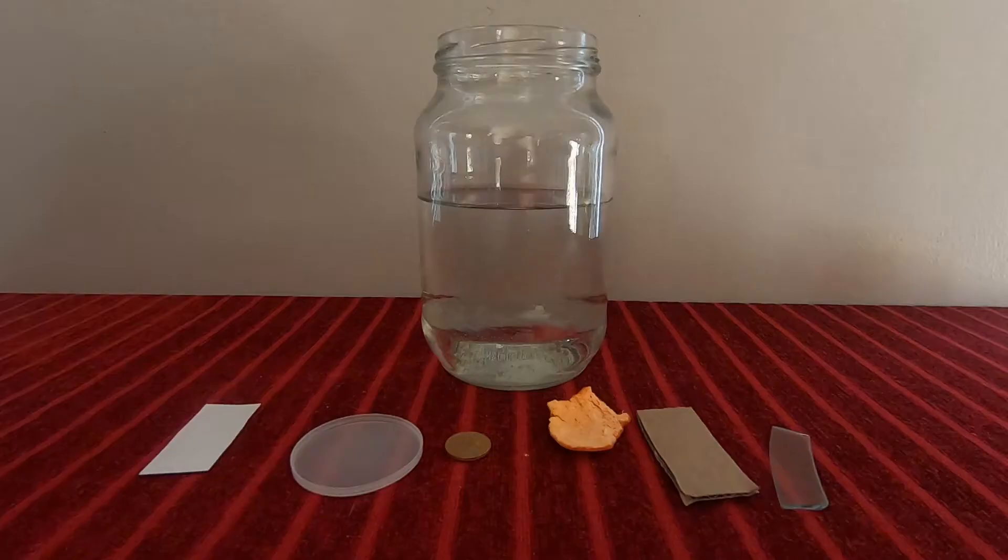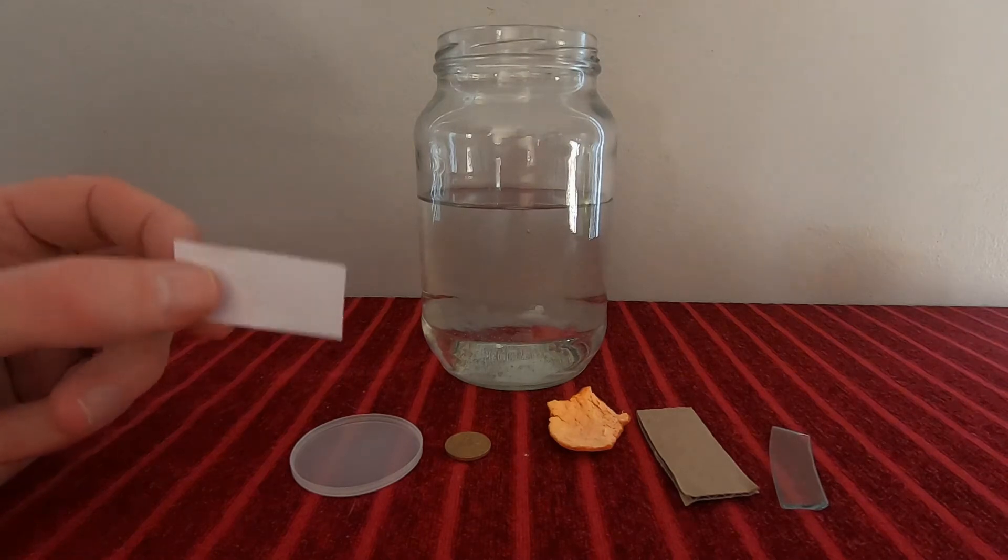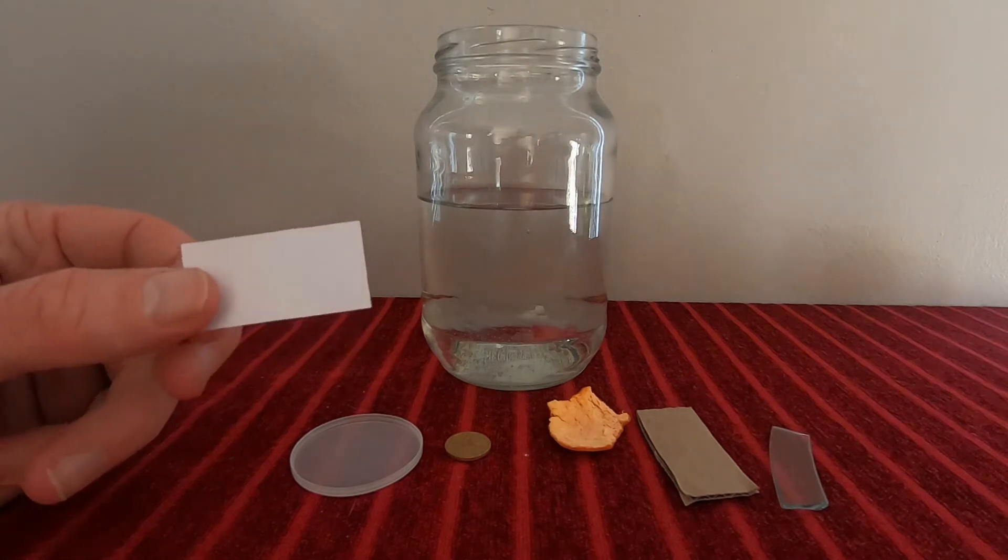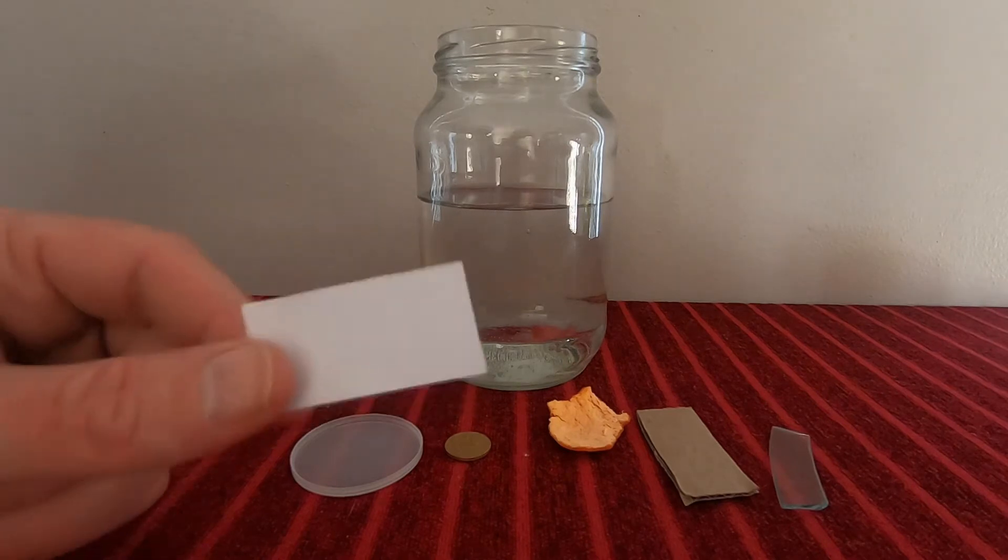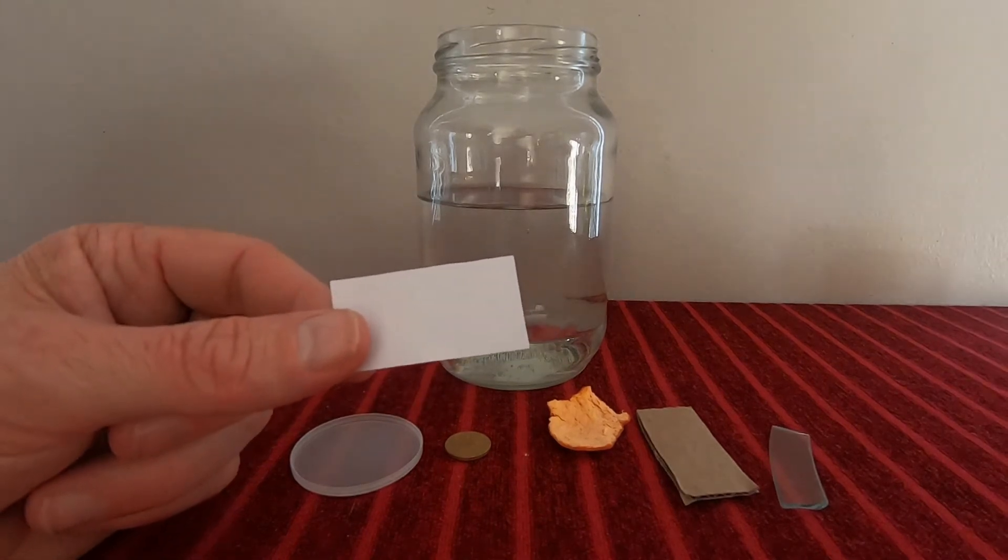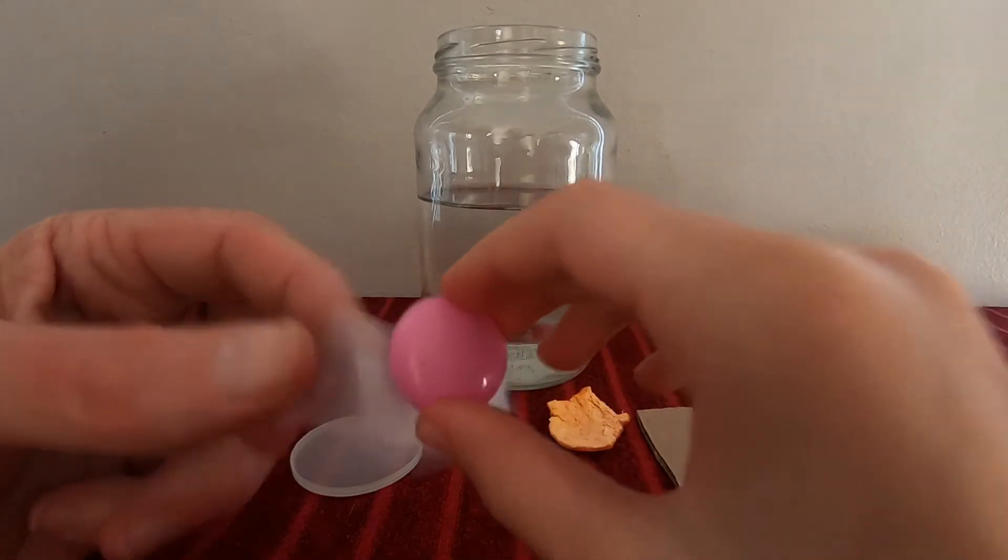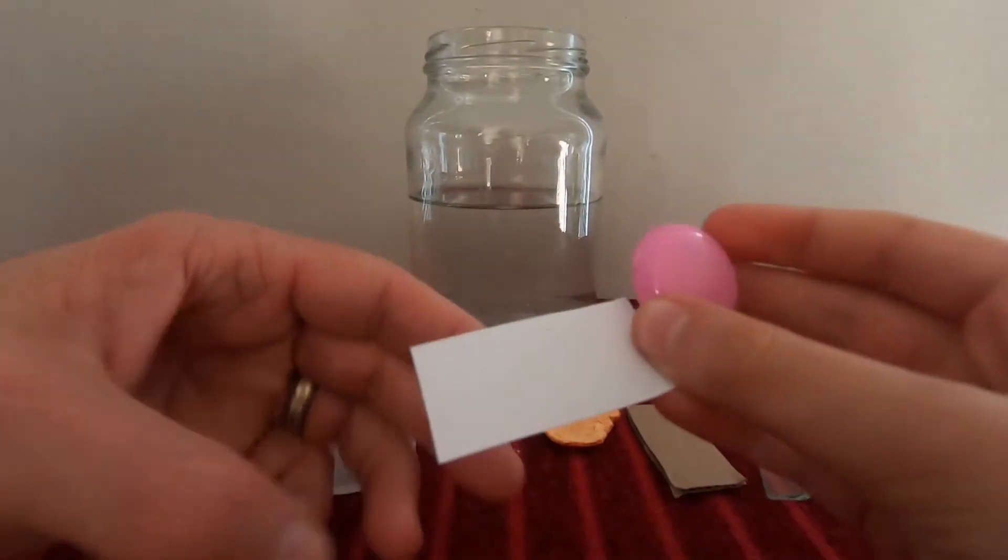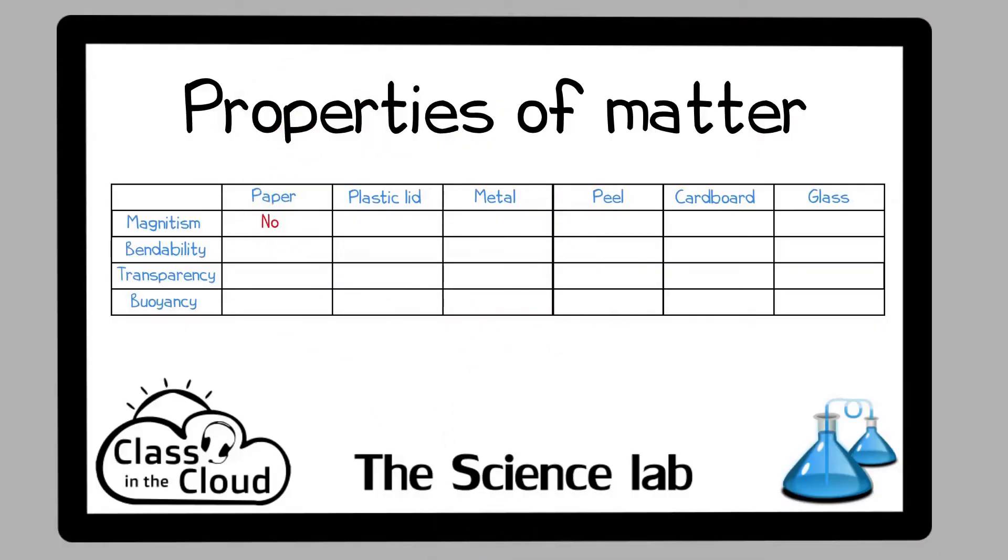Well, thank you very much Zoe, so let's start with our experiment. First we're going to start with a piece of paper and check if it is magnetic. Okay, so where is the magnet? Here it is. Let's see. No, it doesn't look like it. No, definitely not.